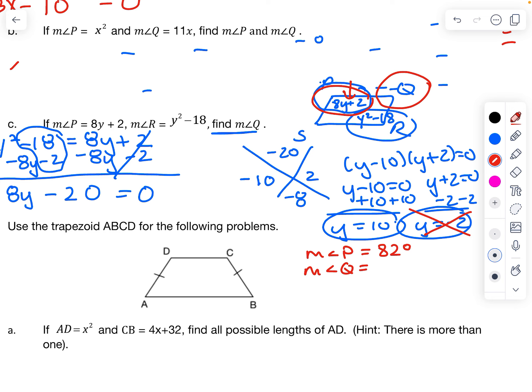But if I know measure of angle P is 82 degrees, what do we know about angle Q? One of the things that we learned about angle Q, the two angles that are next to each other have to add up to 180. So if I do 180 minus 82, this will give me 98 degrees. So that's my answer.